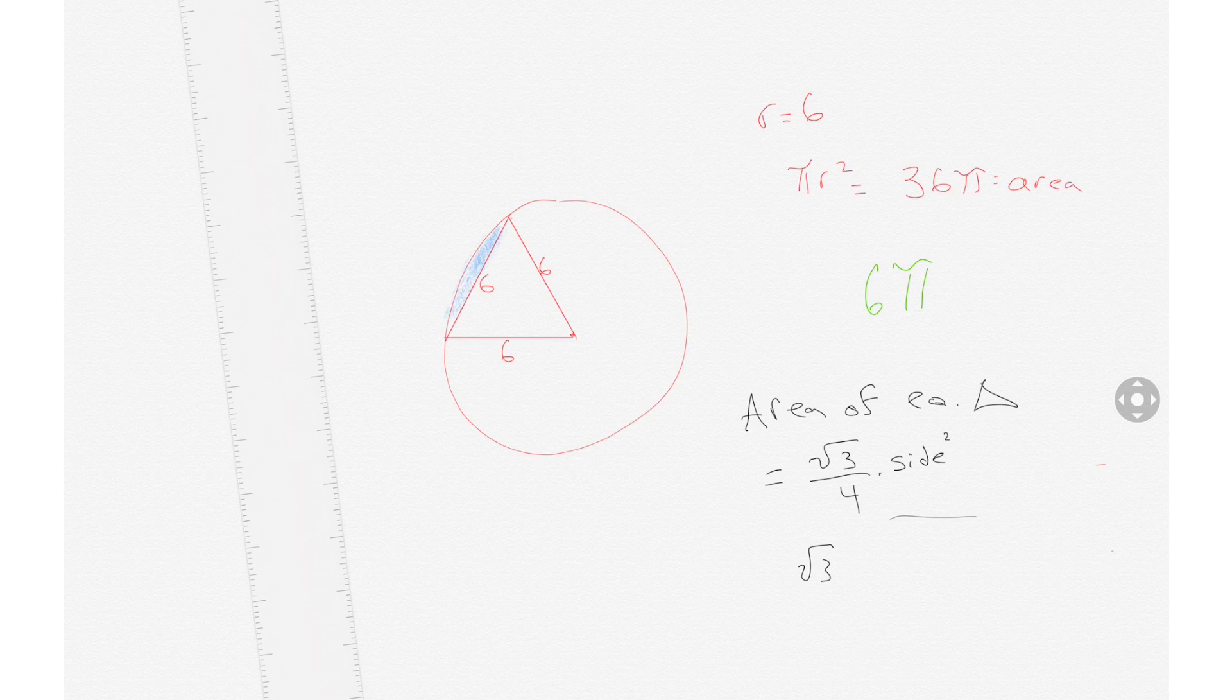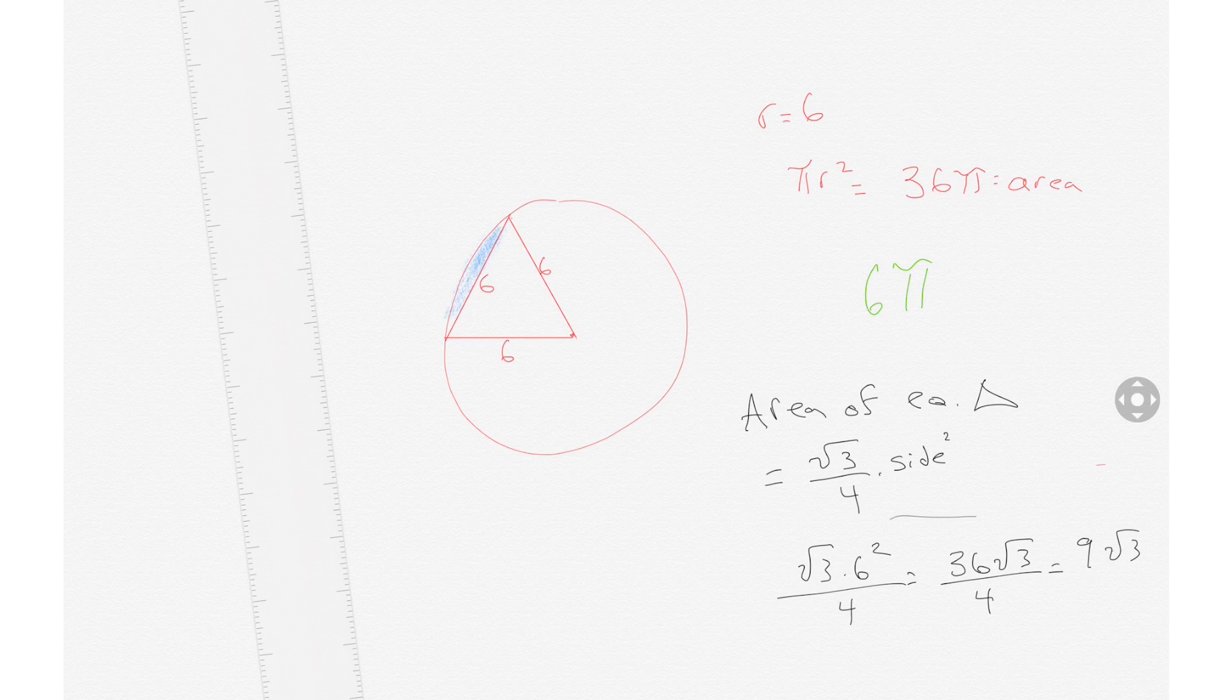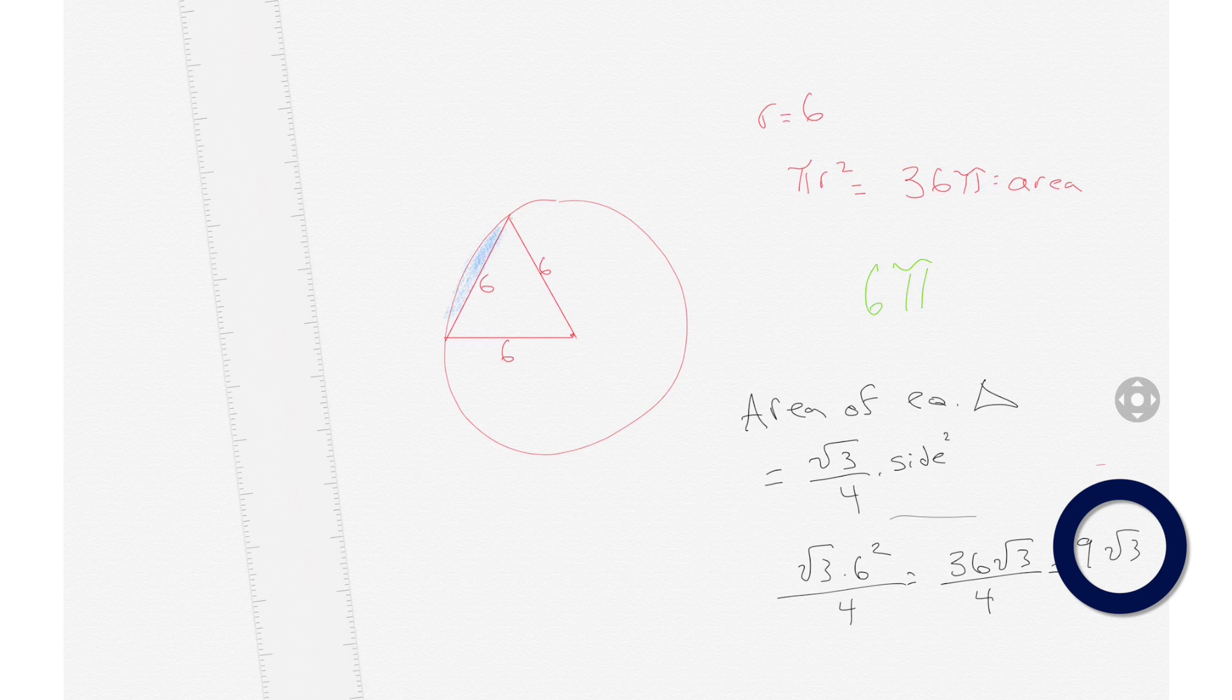So we would have square root of 3 times 6 squared divided by 4, and that would then be square root of 3 times 36 divided by 4. We could simplify that. 4 goes into 36 nine times. So the area of the equilateral triangle is 9 times the square root of 3.